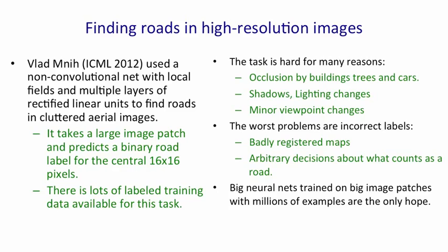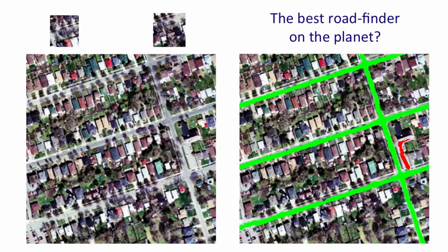Here's what the data looks like — this is a part of Toronto. Above the aerial image are two patches extracted from it, and if you look at those patches you can see it's not trivial to tell which pixels are road. On the right is the output of Vladimir Nhi's system: green pixels are correctly identified road pixels, and red means things the system thought might be road that actually aren't. That red region is actually a parking lot, but you can see why he might have thought it was a road.